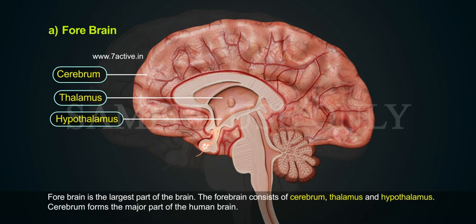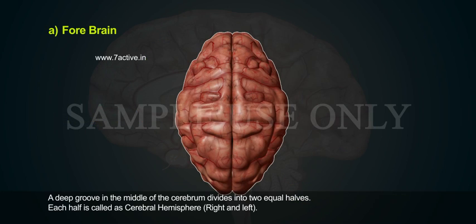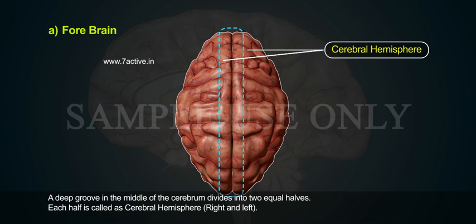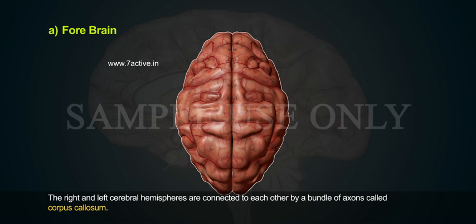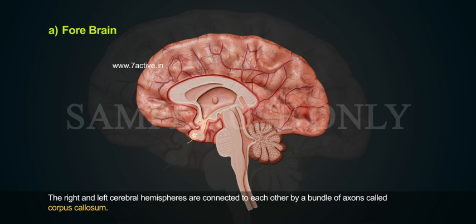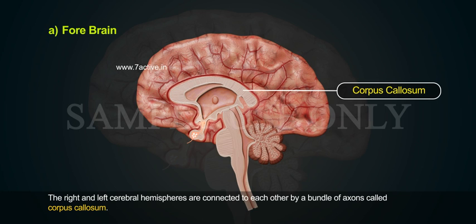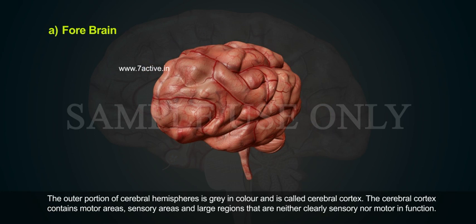Cerebrum forms the major part of the human brain. A deep groove in the middle of the cerebrum divides it into two equal halves. Each half is called a cerebral hemisphere — right and left. The right and left cerebral hemispheres are connected to each other by a bundle of axons called corpus callosum. The outer portion of the cerebral hemisphere is grey in colour and is called cerebral cortex.